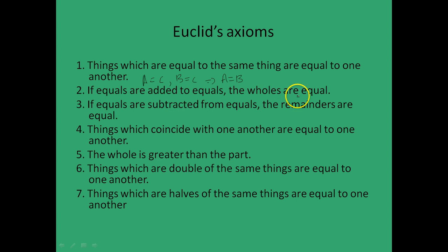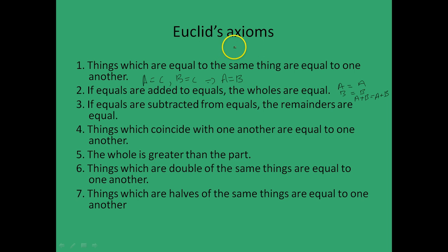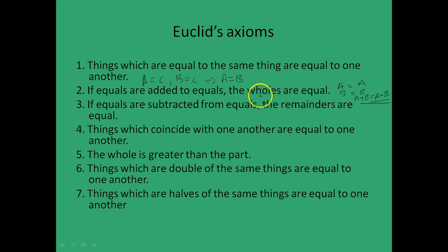If equals are added to equals, then the wholes are equal — that is, if A equals A and B equals B, then A plus B equals A plus B. This may seem like a truism, but that is the nature of Euclid's axioms because you cannot prove them at a more fundamental level. They are taken to be true and look like they must be true for our world to make sense. Keep in mind that 'equals' or 'wholes' do not refer to numbers only — they could stand for other magnitudes as well.